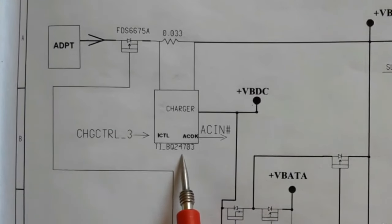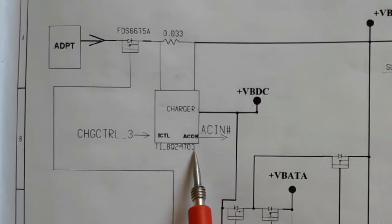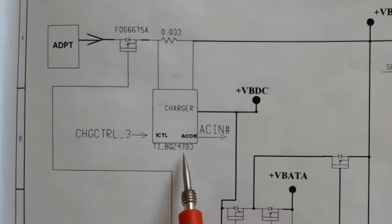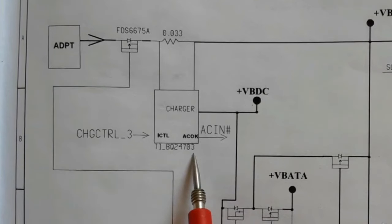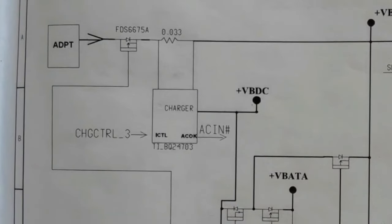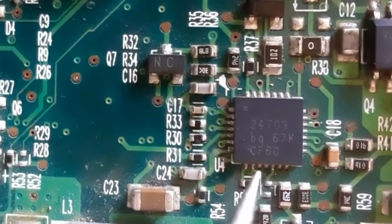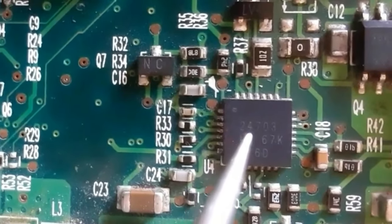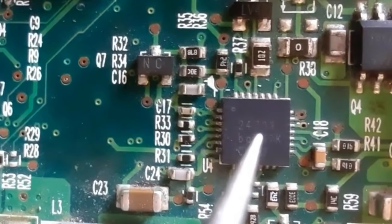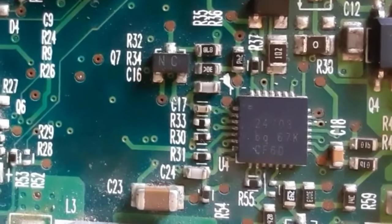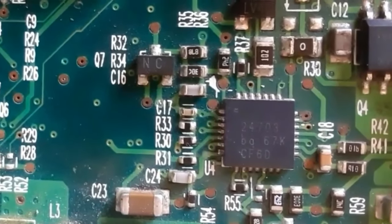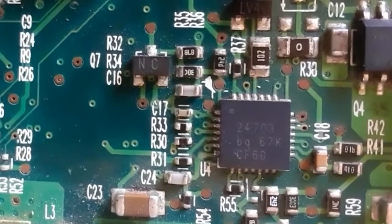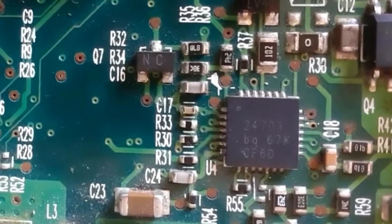Now we're going to see all these ICs in a real motherboard. Starting with the charge IC — the BQ24703. Here it is on the actual motherboard — the BQ24703 charge IC.